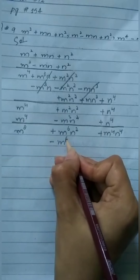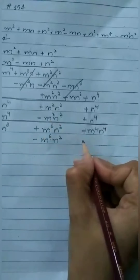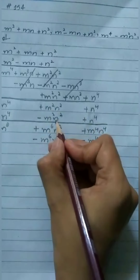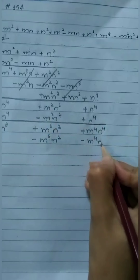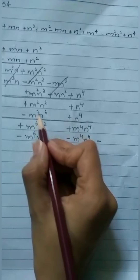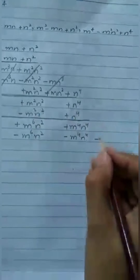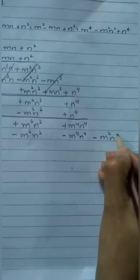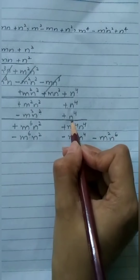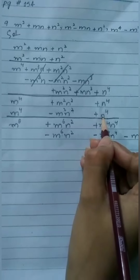Minus m²n² multiplied by m⁴ gives minus m⁶n². Then minus m²n² multiplied by n⁴: 4 plus 2 equals 6, giving plus m²n⁶. The third term: n⁴ multiplied by m⁴ gives m⁴n⁴, written on the other side.